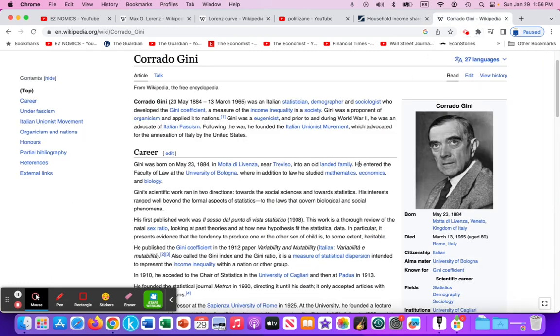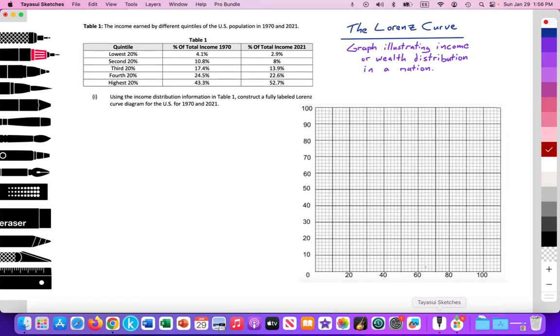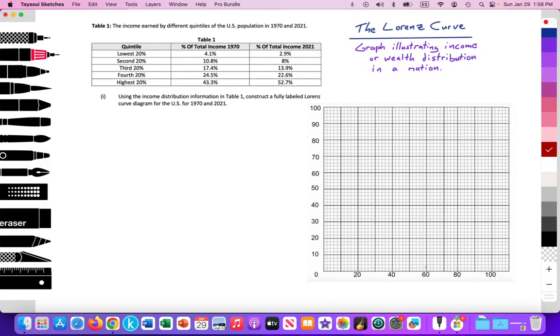In another video, we will then go over the Gini coefficient, which was created by Corrado Gini, an Italian statistician, but that will be the topic for another video. So on a paper 3 type of exam for HL students, they may be given a table of data. So here we have income data, not wealth, income for different quintiles.